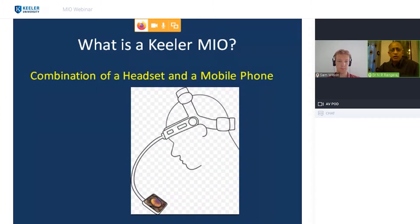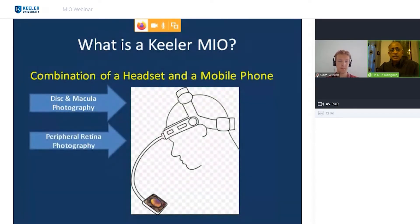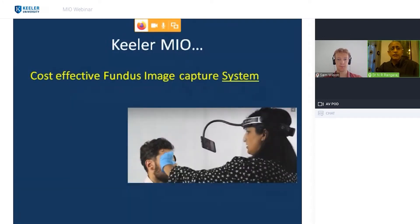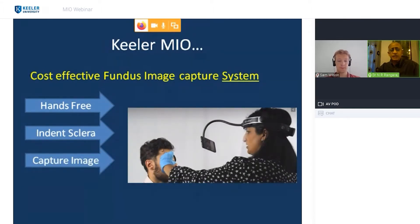The MIO combines a headset and a mobile phone. It gives you disc and macular photography as well as peripheral retina imaging — something a fundus camera struggles with. You get a dedicated software app which gets updated, giving you a professional approach. It's a very cost-effective image capture system. With the headband fixed on the headset, your hands are free to do scleral indentation, capture, and process the image.